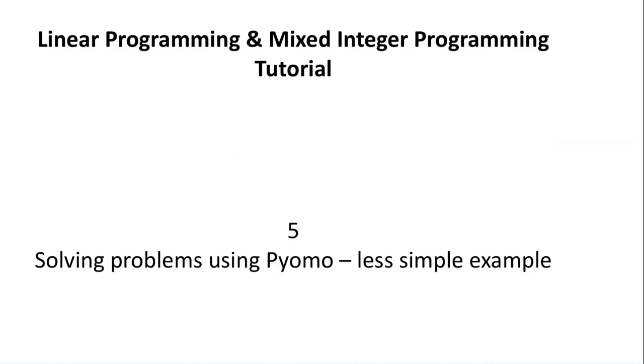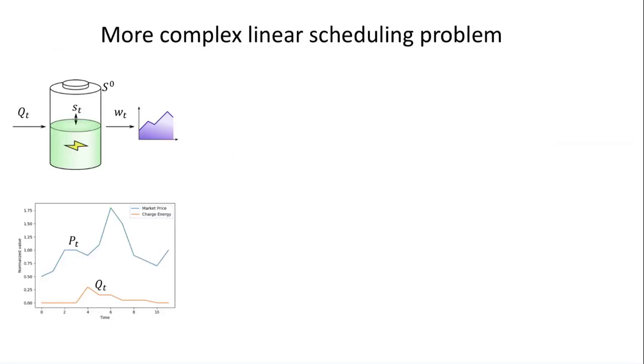Now that we've gone through a basic example of how to implement an optimization program in PyMO, let's move on to something more complicated and interesting. In this example, we'll go through a linear scheduling problem.